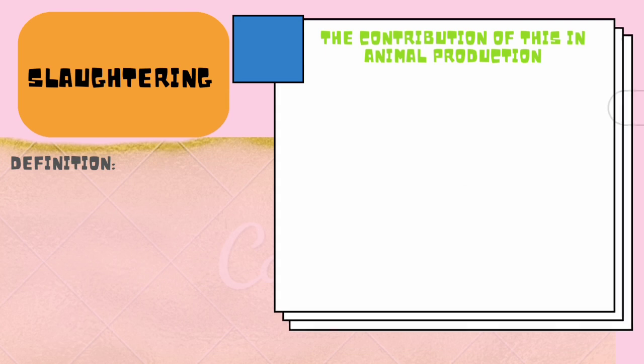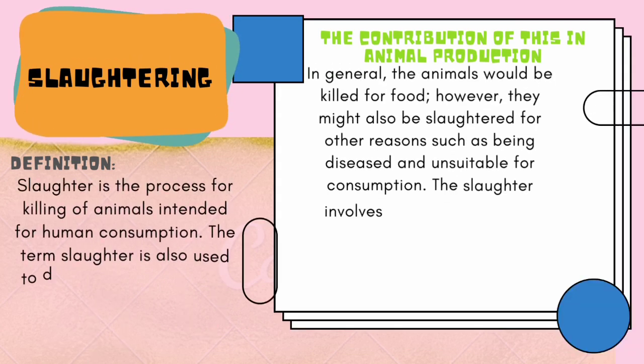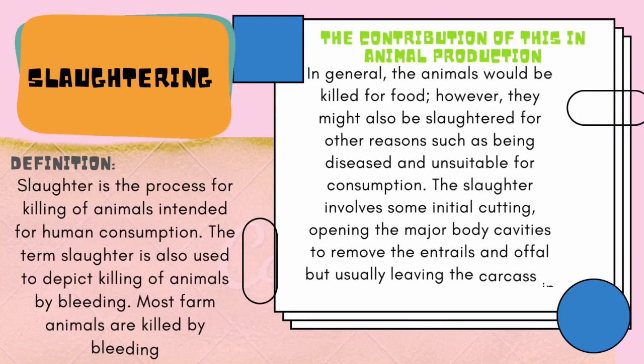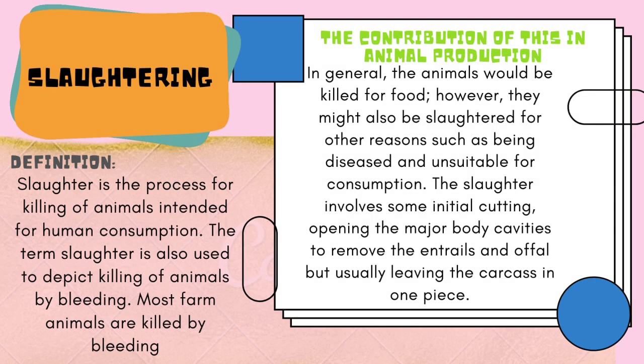The fourth principle is slaughtering. Slaughtering is the process of killing animals intended for human consumption. The term slaughter is also used to depict the killing of animals by bleeding, and most farm animals are killed by bleeding. In general, the animal would be killed for food; however, they might also be slaughtered for other reasons such as being diseased and unsuitable for consumption. The slaughter involves opening the major body cavities to remove the entrails and offals, usefully leaving the carcass in one piece.